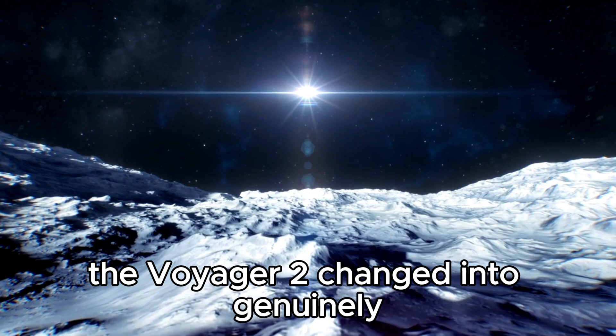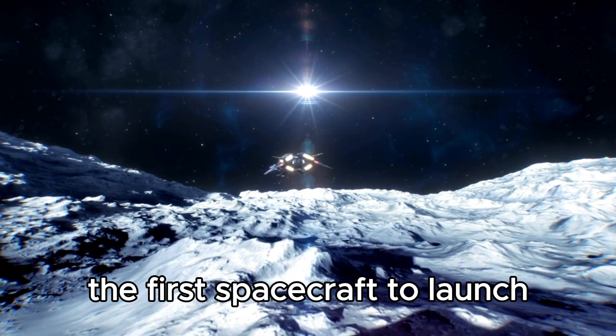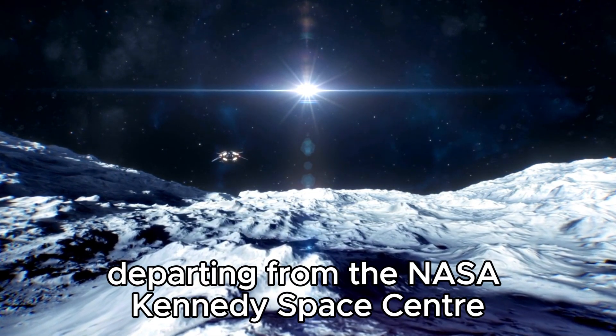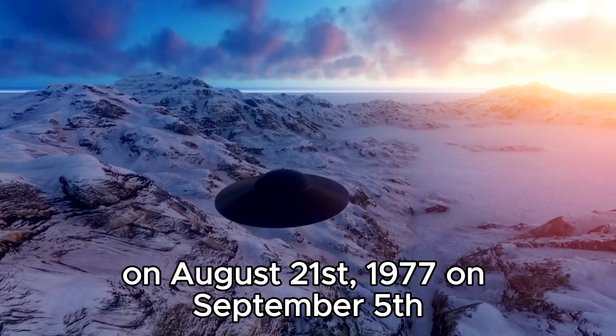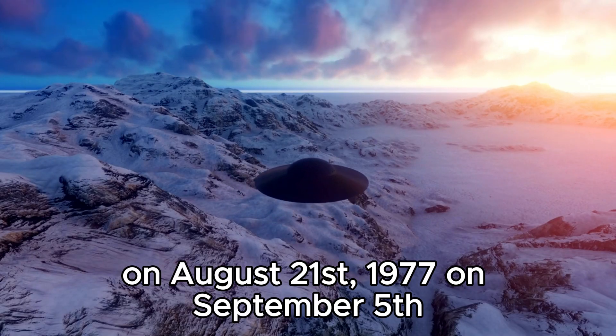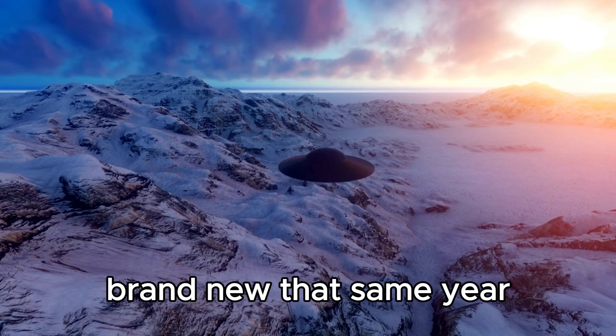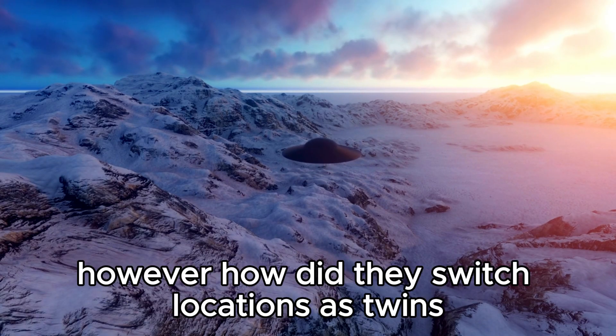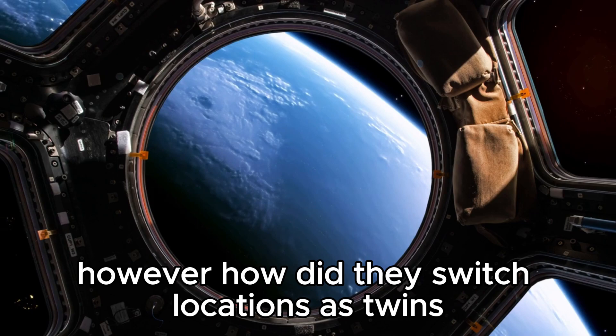Voyager 2 was actually the first spacecraft to launch, departing from NASA Kennedy Space Center on August 21, 1977. On September 5th of that same year, Voyager 1 was launched two weeks later. However, how did they switch locations as twins?